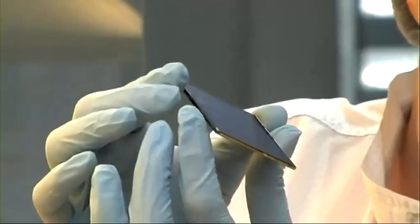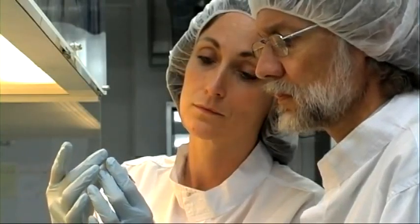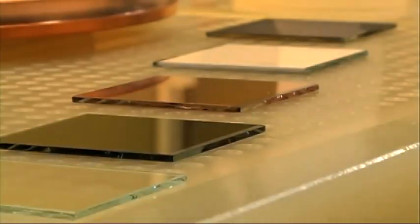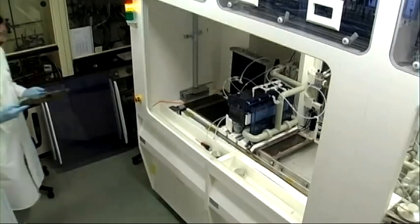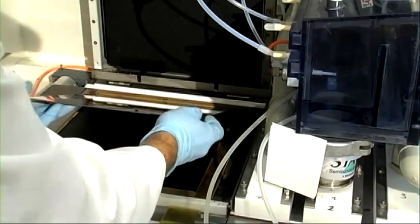An electron micrograph reveals the structure of the solar cell. On top is the n-type layer. Directly below it is the p-type layer of copper indium sulfide. And finally, on the bottom, is the contact layer of molybdenum.